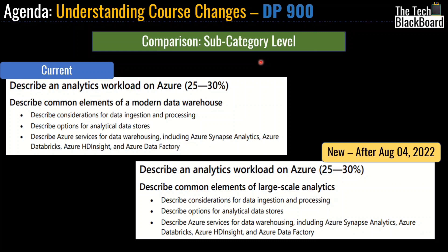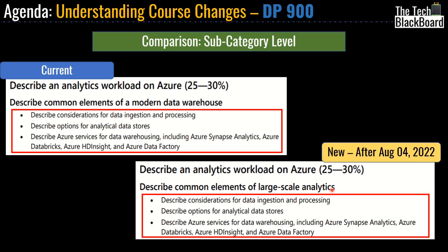In the previous slide, we did a comparison between the skill measured — current versus new. In this slide, we are comparing on a subcategory level. Here you can see the heading 'describe an analytics workload on Azure,' which is 25 to 30 percent in both setups. However, when you come to the subcategory level, the current setup says 'describe common elements of a modern data warehouse,' while the new setup says 'describe common elements of large-scale analytics.' So the major heading is the same — it is the subcategory where Microsoft has done a little bit of tweaking. Everything else remains the same at the more granular level.